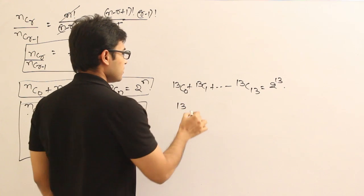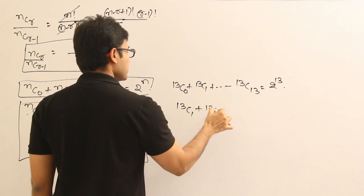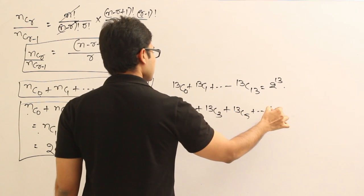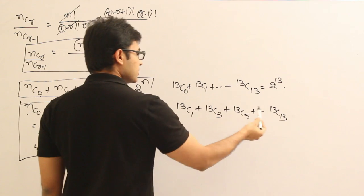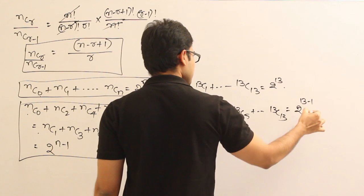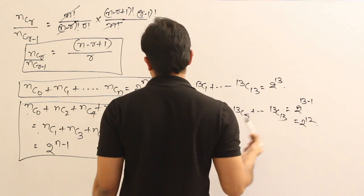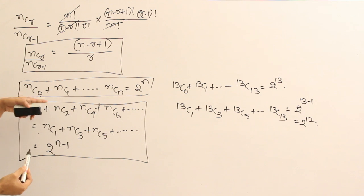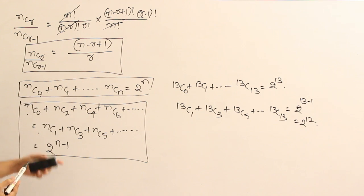Similarly, let us say 13C1 plus 13C3 plus 13C5 plus so on plus 13C13. It is nothing but sum of all odd terms. Odd terms is equal to 2 power N minus 1, which is 2 power 12. Got it? So, this is how these two results can be used. And even when we go to the problems, I will show you even more problems on that.